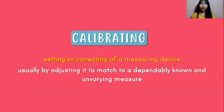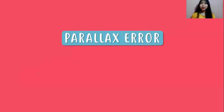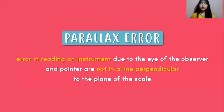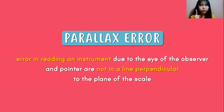The next thing to know is zeroing. Zeroing is when you set a measurement back to zero value. For example, if you're going to use a balance, don't forget to put everything back to zero so that the measurement starts from zero. Next is parallax error — parallax error is an error in reading an instrument due to the eye of the observer and the pointer not being perpendicular to the plane of the scale. For example, when measuring the volume of water in a graduated cylinder, remember to put your eyes in line with the pointer, because when your eye is too low or too high, it will show a different result.